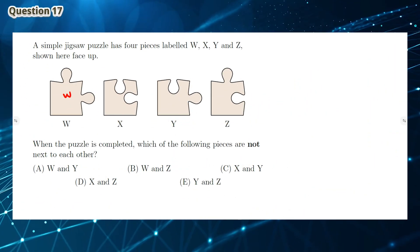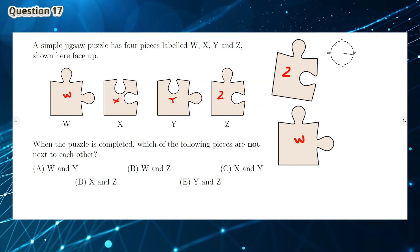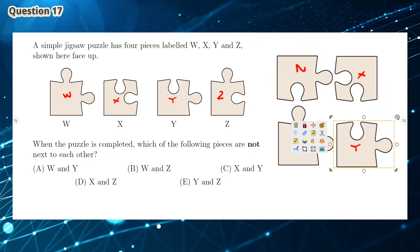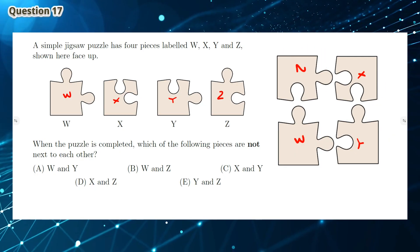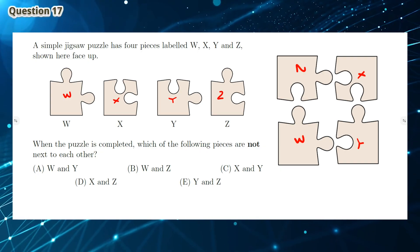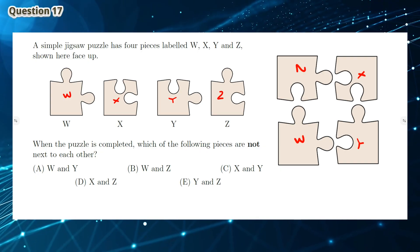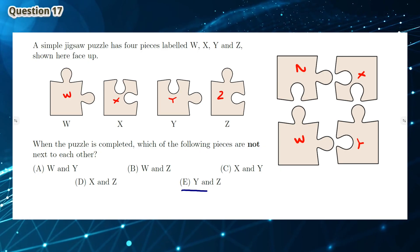Question 17: We can complete the jigsaw puzzle as shown. The two sets of pieces which are not next to each other are W and X, and Z and Y. Out of the answer options, only Y and Z exist. This means the answer is E.